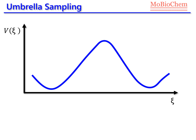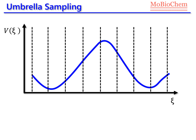Here we have the potential energy profile of our reaction along the reaction coordinate. Of course, we don't know this potential energy profile before running the simulation, but we are representing it here just for simplicity. The first thing we need to do is divide the reaction coordinate into several windows. We need to know the range of the reaction coordinate that we want to simulate. If we know the reaction coordinate and more or less the range, then we can use umbrella sampling.